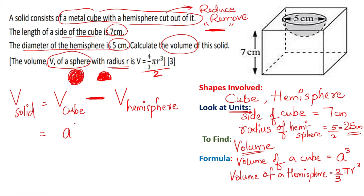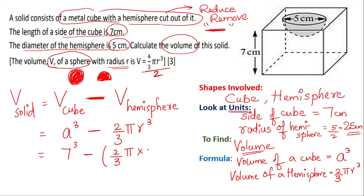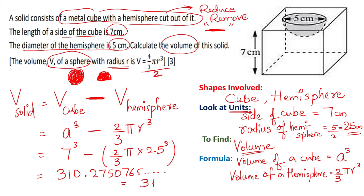So you have a³ minus (2/3)πr³. Substituting the values, you have 7³ minus (2/3)π(2.5)³. Make sure you are using appropriate brackets while using your calculator. Your answer is going to be 310.2750765 on your calculator, so the final answer rounded to the required accuracy becomes 310 cm³.